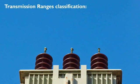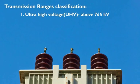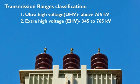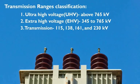Several terms may be used to classify transmission ranges, such as: 1. Ultra-high voltage, UHV, above 765 kV. 2. Extra-high voltage, EHV, 345 to 765 kV. 3. Transmission, 115, 138, 161, and 230 kV.